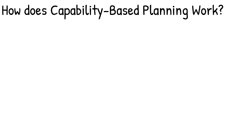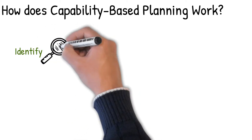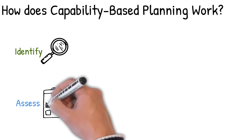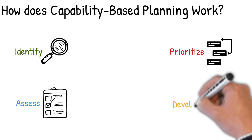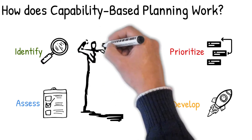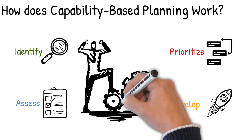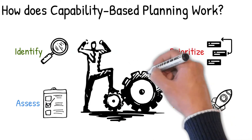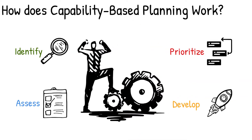How does capability-based planning work? Supported by a collection of techniques such as capability mapping, capability-based planning will enable an organisation to: identify the organisation's capabilities; assess the level of change required for each capability; prioritise the change required for each capability; and develop a plan to make the changes happen. Ideally, capabilities identified as requiring change should be linked to the organisation's strategic goals and objectives. Focusing on these capabilities assists the organisation to stay on track as it works to execute its strategy.